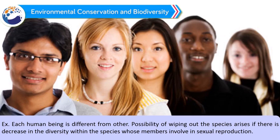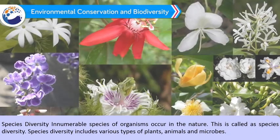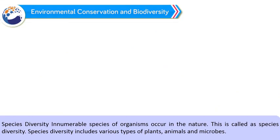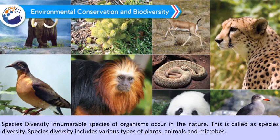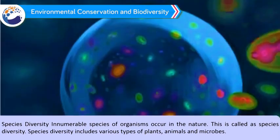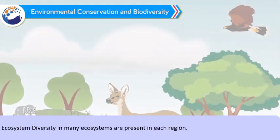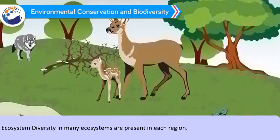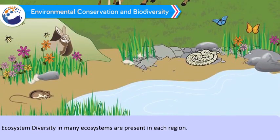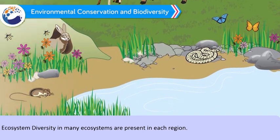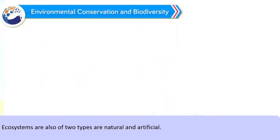Species Diversity: Innumerable species of organisms occur in nature - this is called species diversity. Species diversity includes various types of plants, animals, and microbes. Ecosystem Diversity: Many ecosystems are present in each region. An ecosystem is formed through the interaction between plants, animals, their habitat, and changes in the environment. Each ecosystem has its own characteristic animals, plants, microbes, and abiotic factors. Ecosystems are also of two types: natural and artificial.